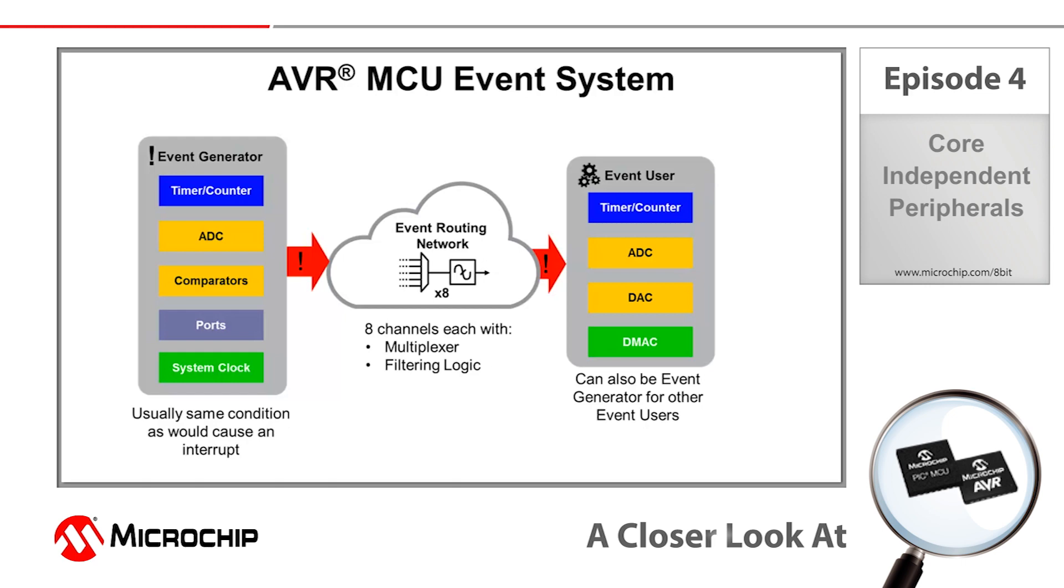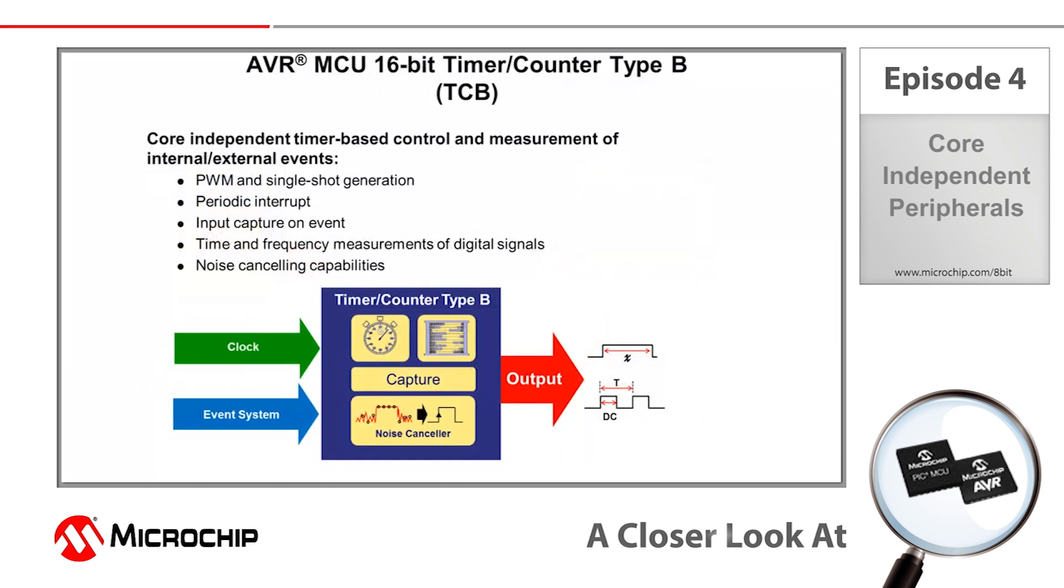A counter like the 16-bit timer counter type B or TCB peripheral on the ATtiny817 just so happens to have a single shot generation mode which outputs a pulse of a user defined duration when it is triggered. So what I'm going to do is use this to generate our one shot output. The port IO connected to the push button in our design is going to be routed using the event system to the timer counter type B so that a change on the input on that pin is going to trigger this single shot output.